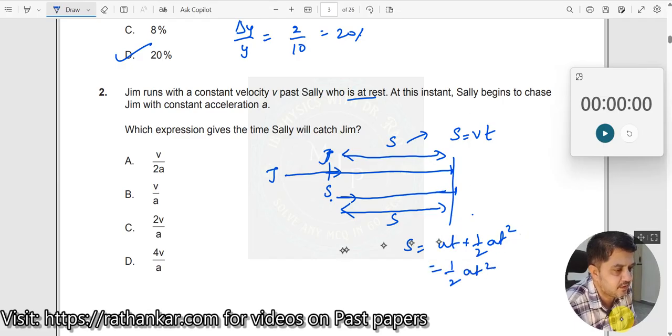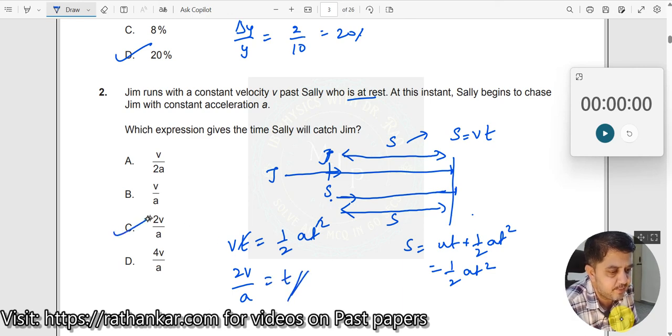Now both of them should be equal, right. So therefore, I can now equate v t is equal to half a t square. Now this t and this square goes away. So what do I need? I need to get the value of t here. So therefore, this should be 2v divided by a is equal to t. So the answer is 2v divided by a.